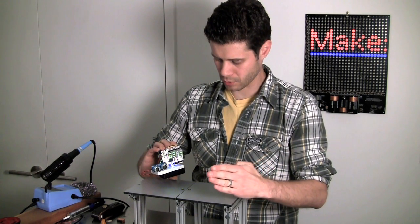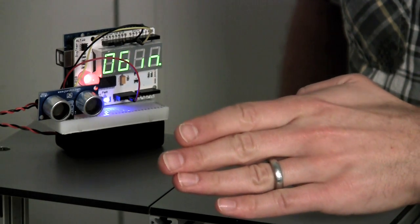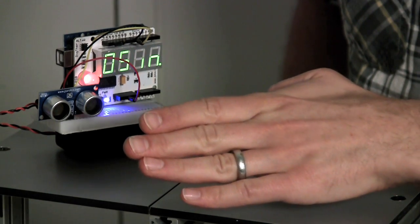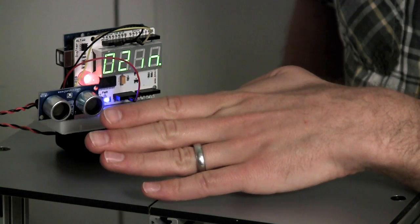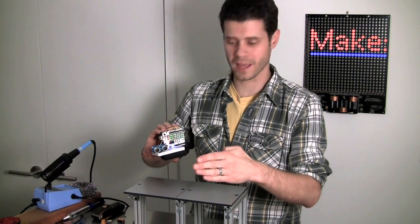And I also set it up to warn me as I get too close. So now I have eight, seven, six, five, four, three, two. So all of those readings are reading out and giving me the red on the LED.